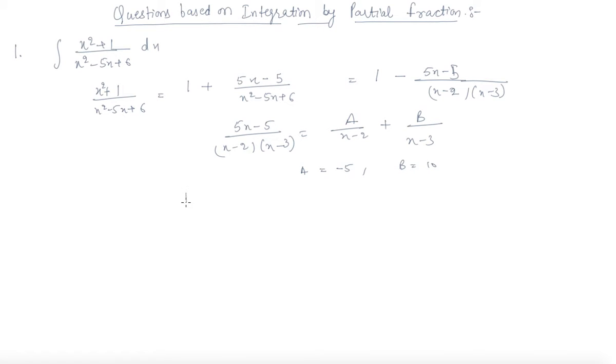So now my total expression becomes 1 minus 5 over x minus 2 plus 10 over x minus 3. So the integrand x square plus 1 over x square minus 5x plus 6 becomes integrand this dx.